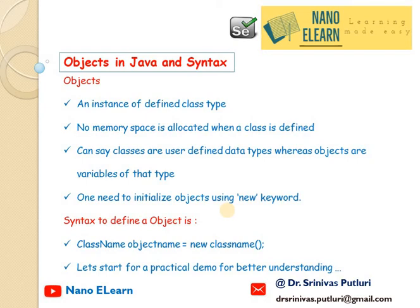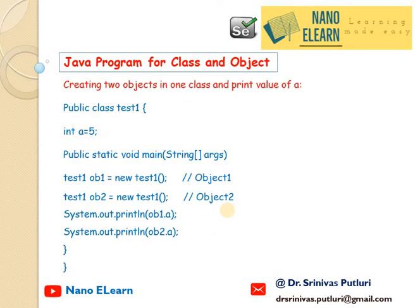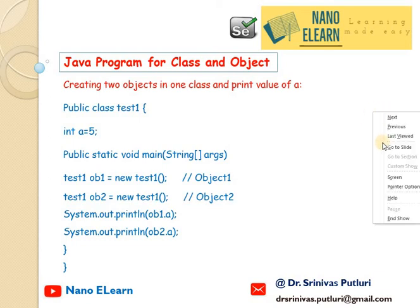Let us see how it can be demonstrated in a practical demo for better understanding. This is the sample program I would like to cover. This program shows us how to create two objects in one class and how to print the value of a variable a. Here we defined a class test1, initialized a variable of int data type with the value equal to 5, and defined two objects ob1 and ob2. With the help of these objects, we are printing the value of a.